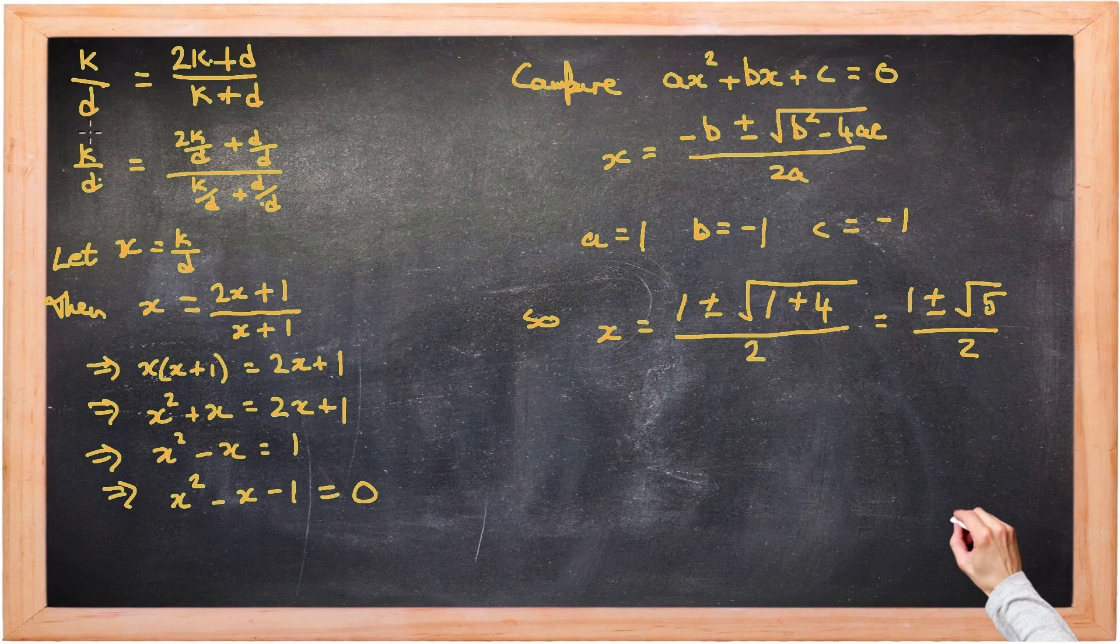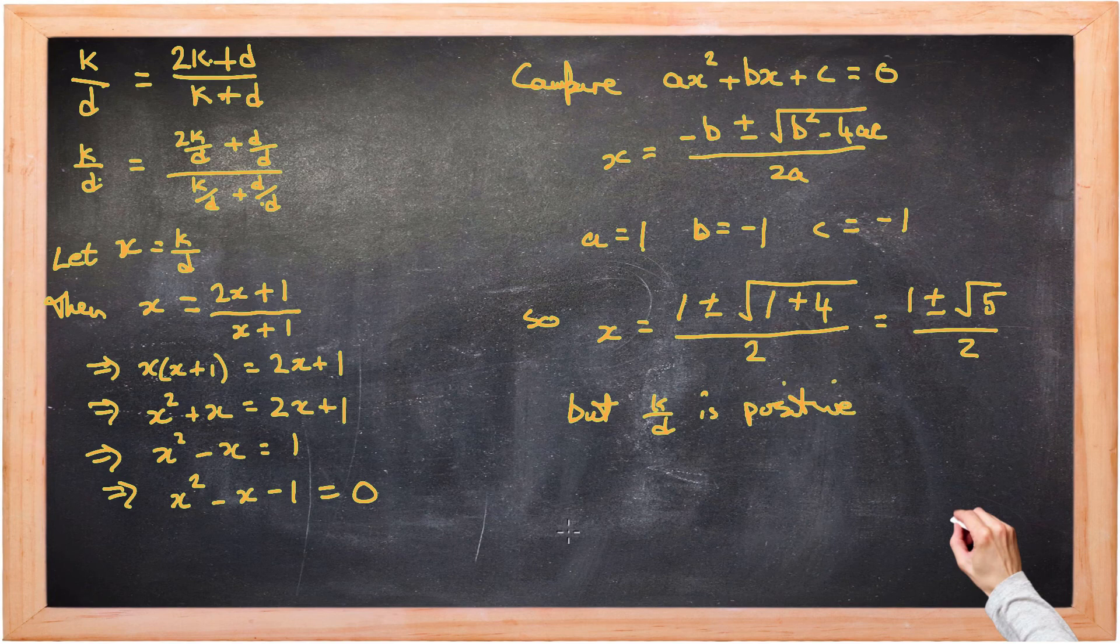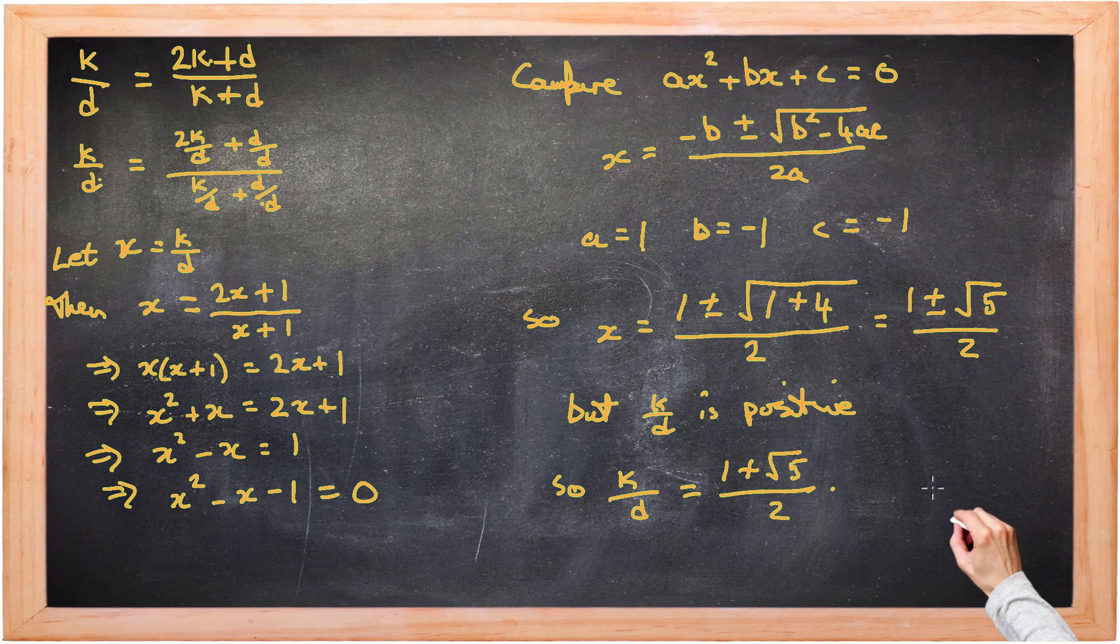Now this ratio kites to darts must be a positive number. k over d is positive. So there's only one possibility. The ratio kites to darts is 1 plus root 5 over 2. And that is the golden ratio.